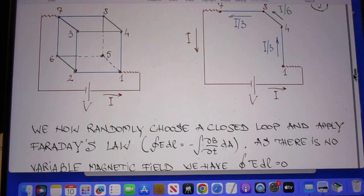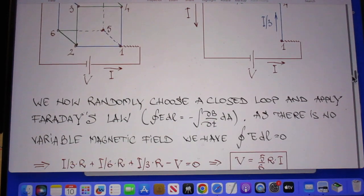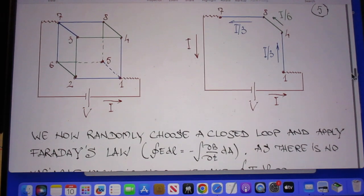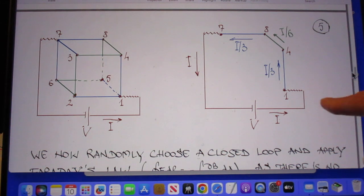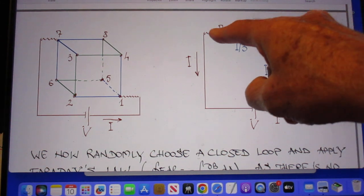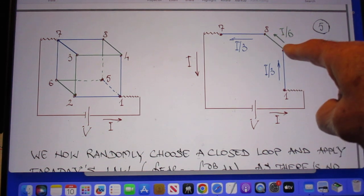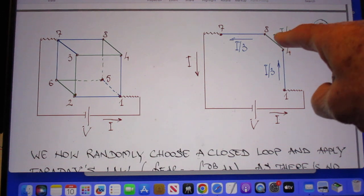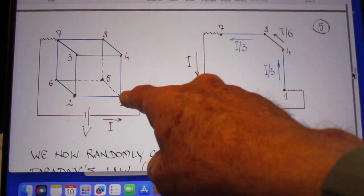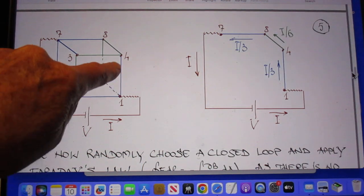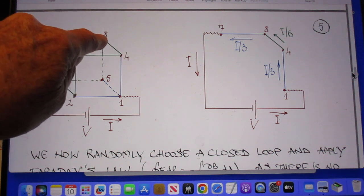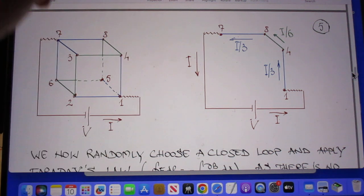So now he chooses for the closed loop, he closes this loop. He goes from one to four, from four to eight, and then to seven, from one to four, from four to eight, and then to seven, and then he closes the loop.